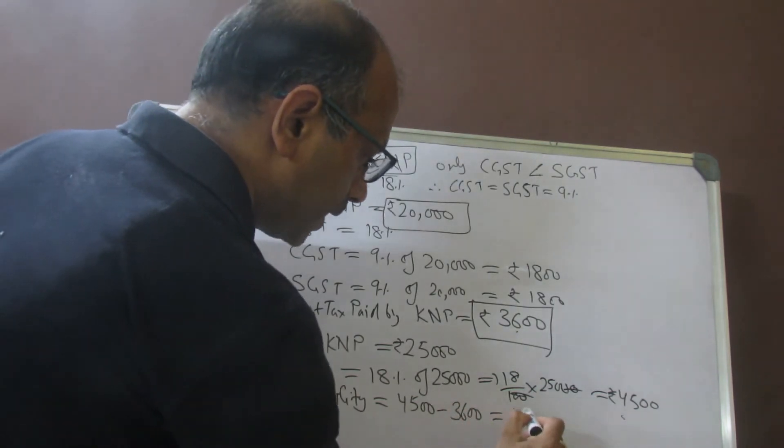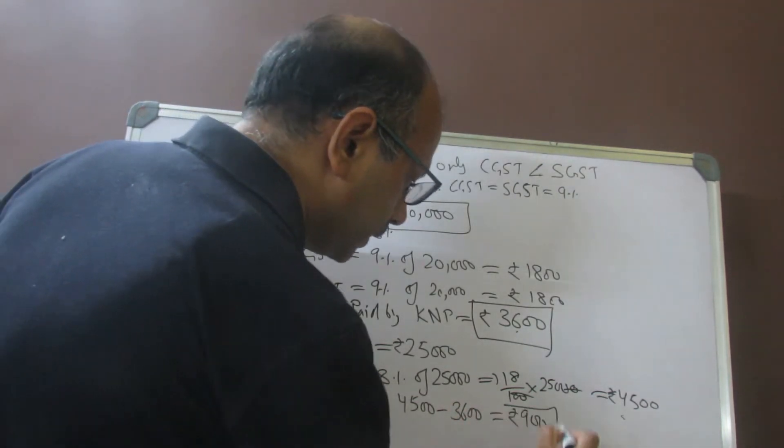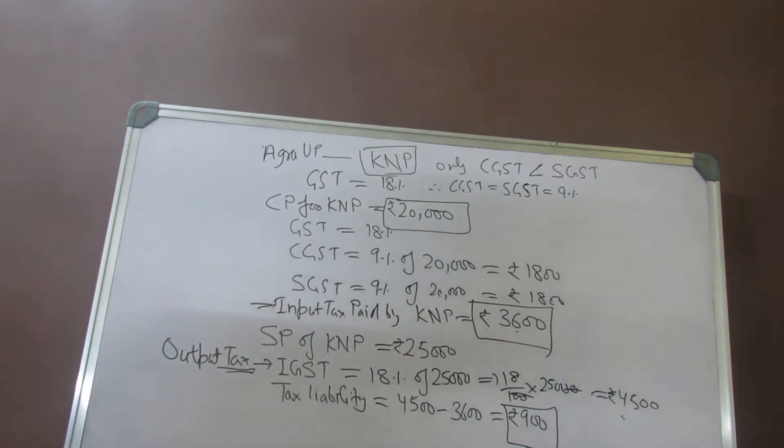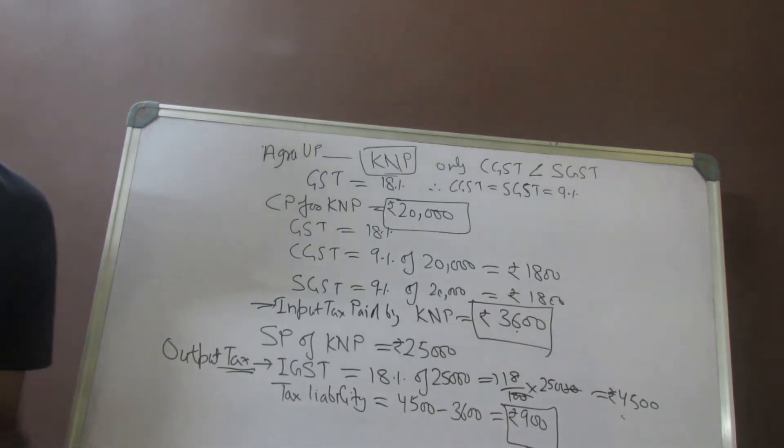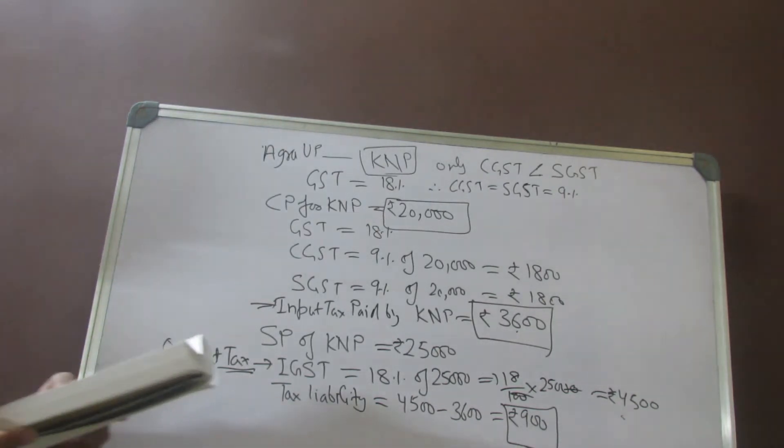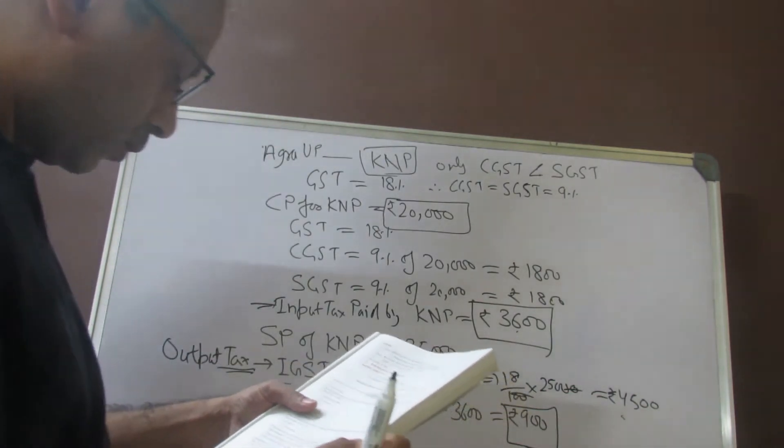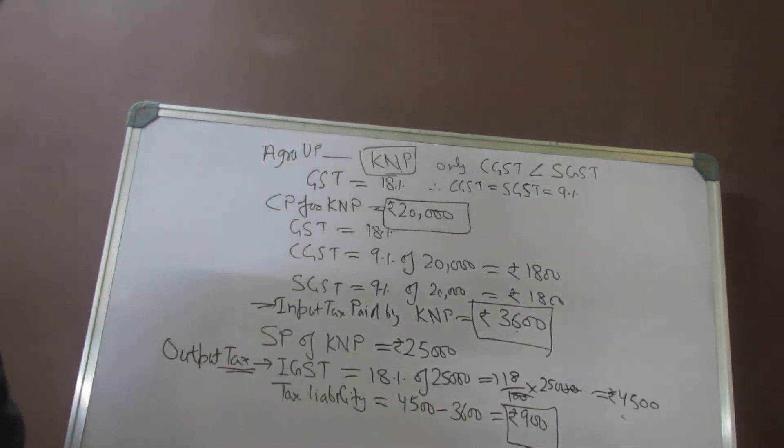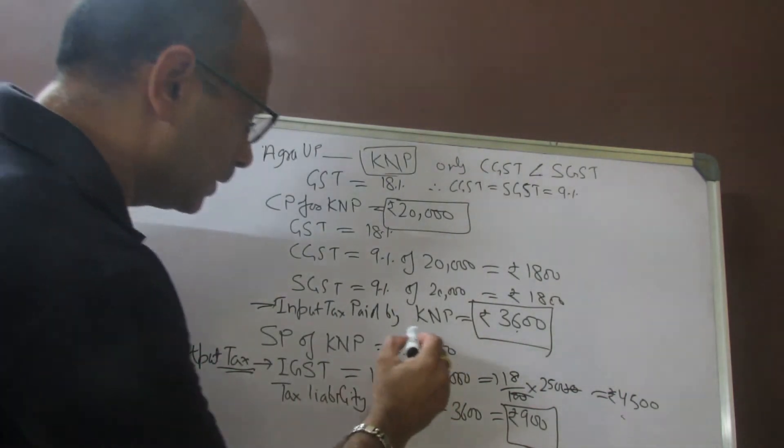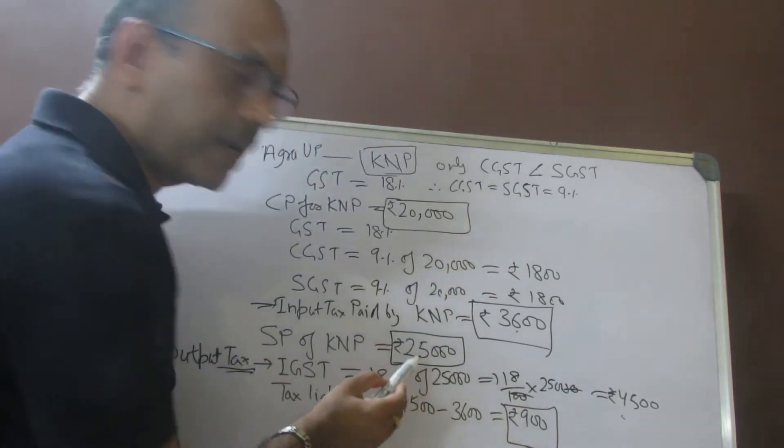Now the second part of the question is the cost of goods and services at Jaipur. Understand, for the Jaipur guy, his cost price is 25,000, and he has paid a GST of 4,500.